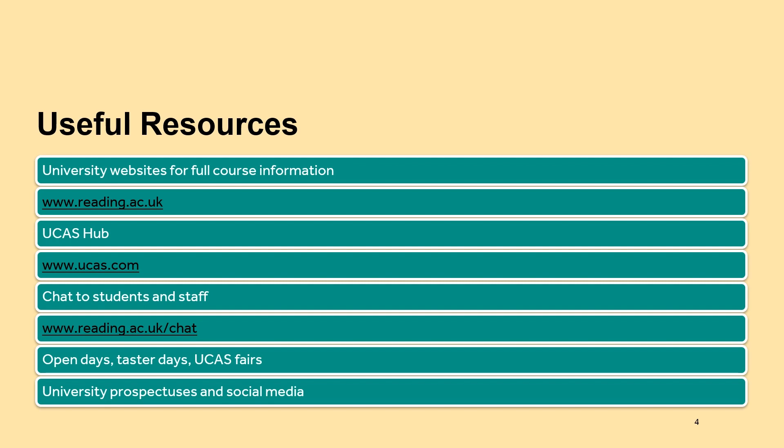You can chat to students and staff at universities directly on Unibuddy — the University of Reading's page is www.reading.ac.uk/chat. Another excellent way to research universities is to attend open days, taster days, UCAS fairs and similar events, which you can find out about on UCAS and on university websites. You can also check out university prospectuses, which are usually free online. Universities often have social media where you can see what they're getting up to and whether it seems like the kind of place you'd like to study.